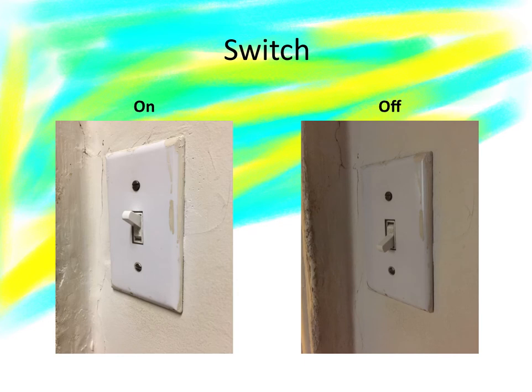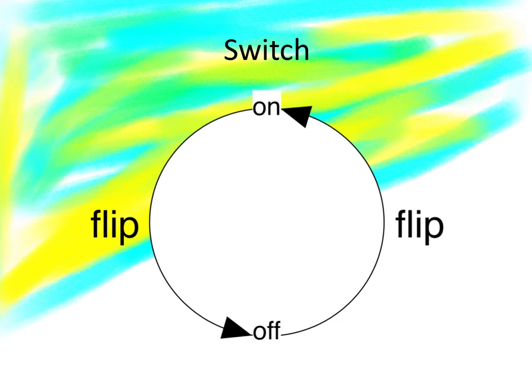Let's look at a switch. It can be either on or off. The same structure appears again. From on, you can flip it to off. From off, you can flip it to on.